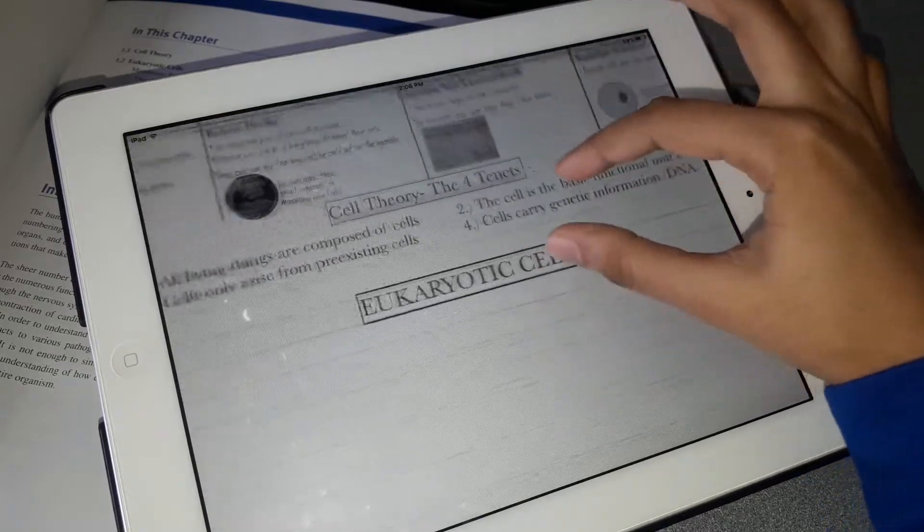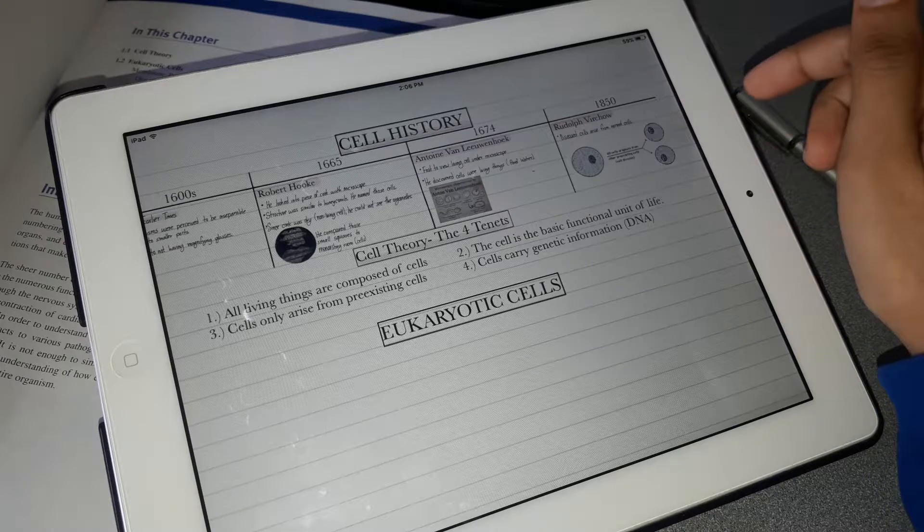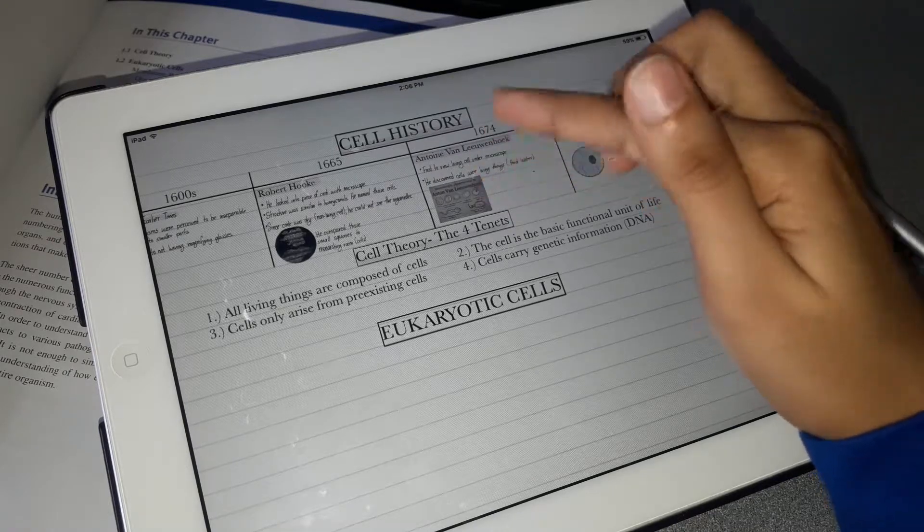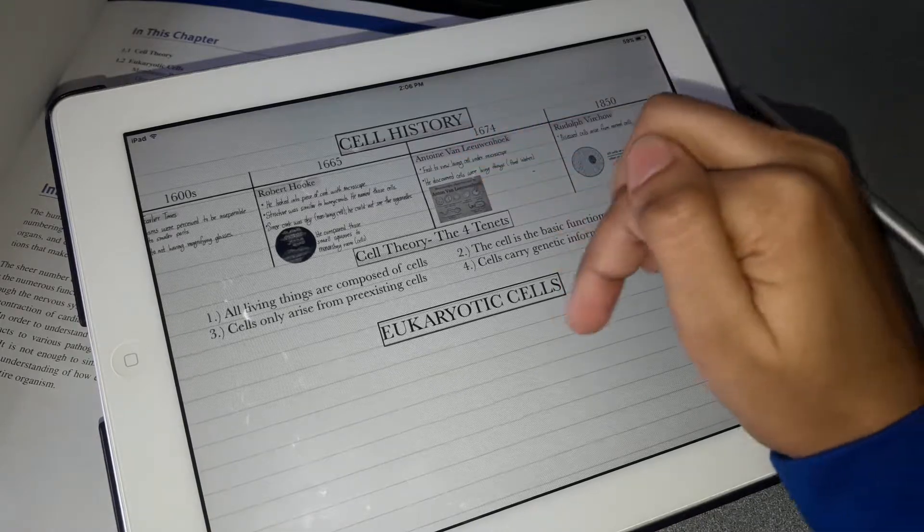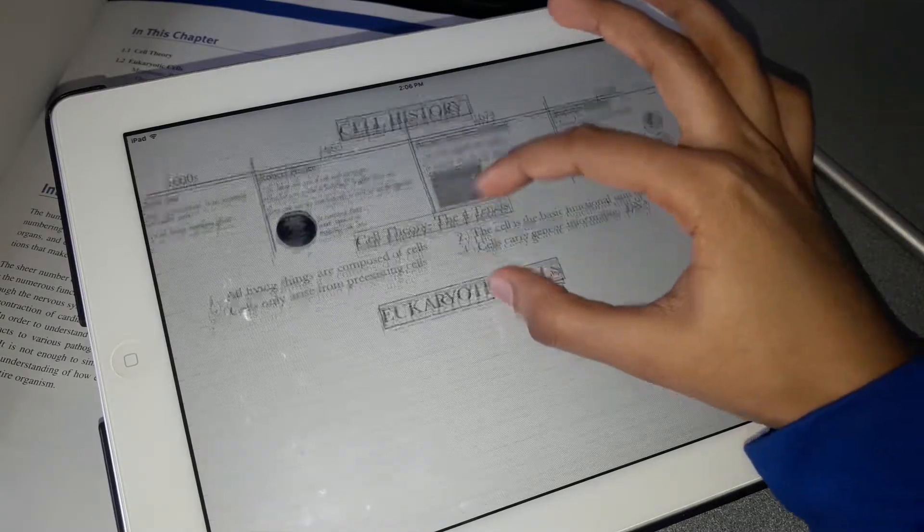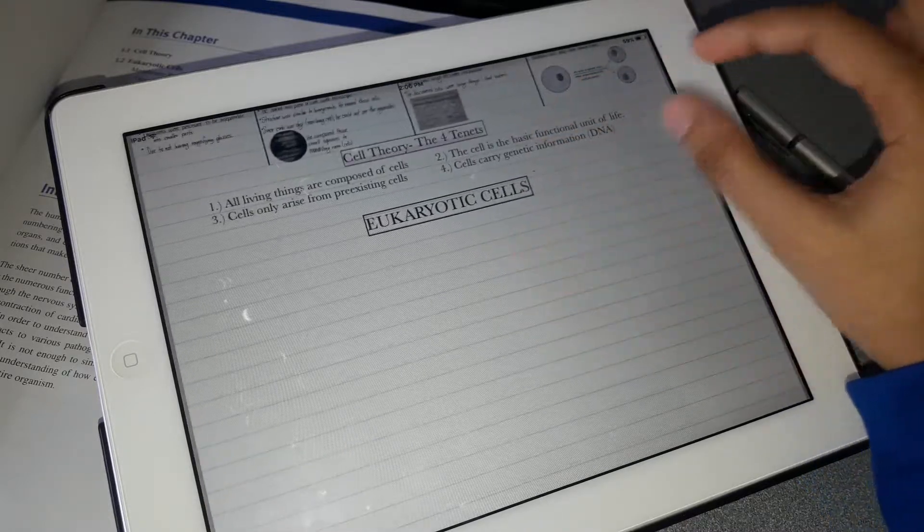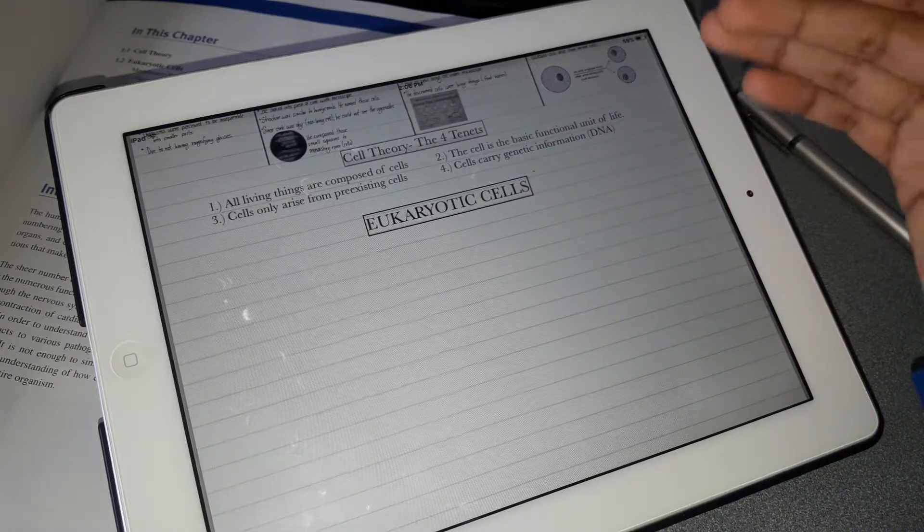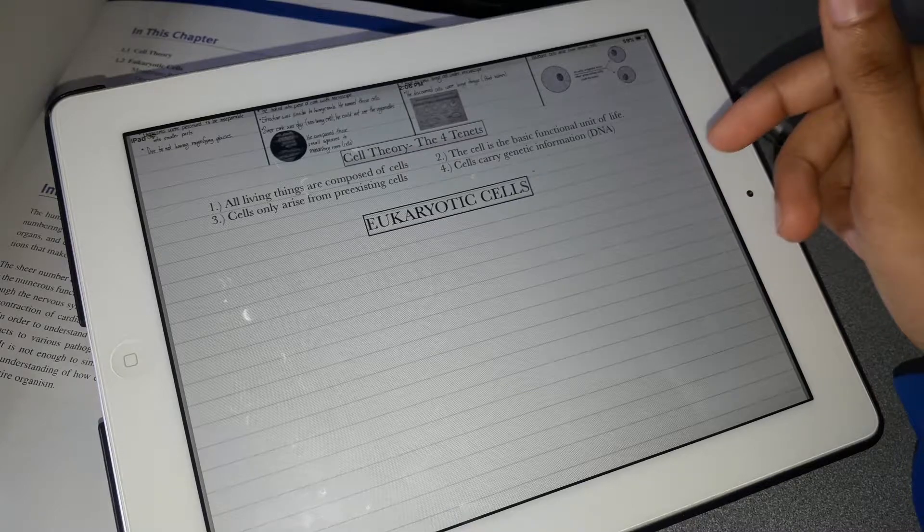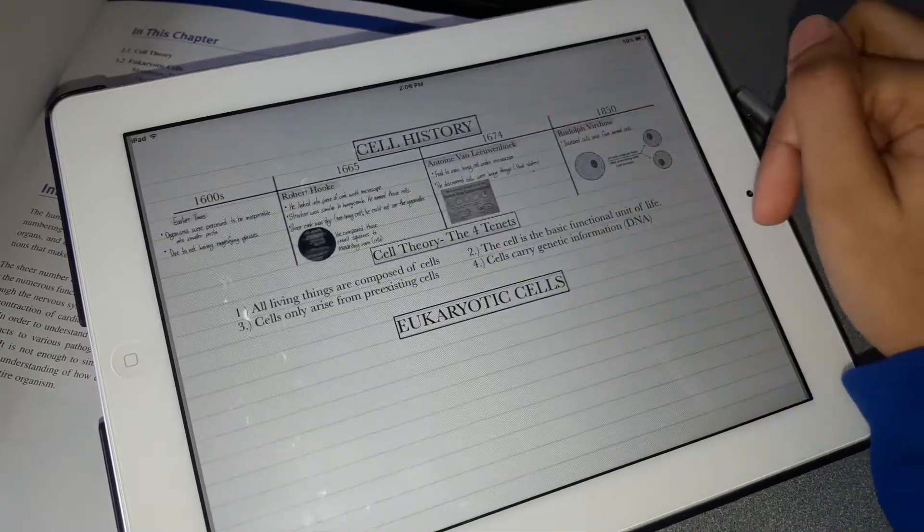That was basically Chapter 1, Section 1 on cell history. The next section is about eukaryotic cells. If you're interested in learning about that, please stay tuned - I'll probably post a video on eukaryotic cells a day after I post on cell history.